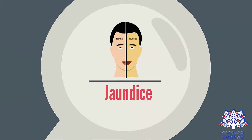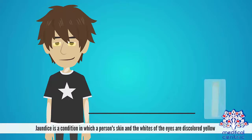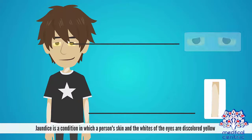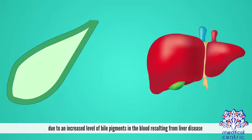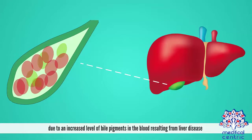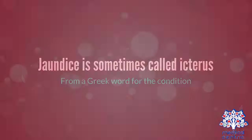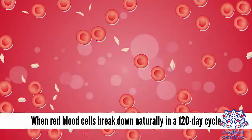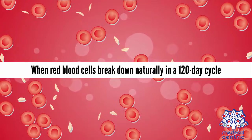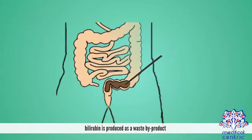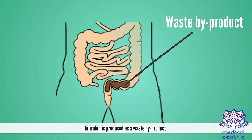Today's topic is Jaundice. Jaundice is a condition in which a person's skin and the whites of the eyes are discolored yellow due to an increased level of bile pigments in the blood resulting from liver disease. Jaundice is sometimes called ichteris, from a Greek word for the condition. When red blood cells break down naturally in a 120-day cycle, bilirubin is produced as a waste by-product.